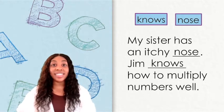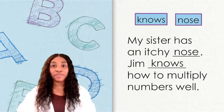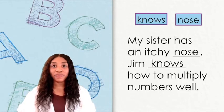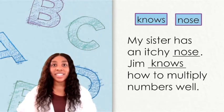Let's read the sentence again together and practice our fluency. Here we go. My sister has an itchy nose. Jim knows how to multiply numbers well. Great work working on these homophones.